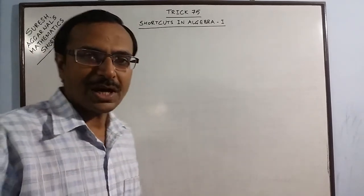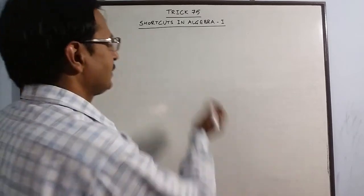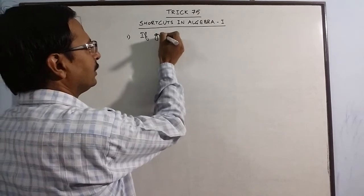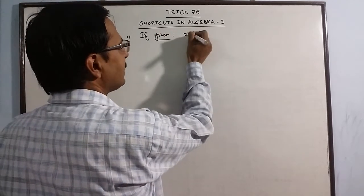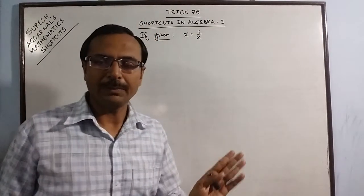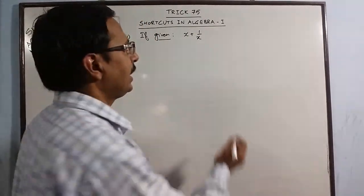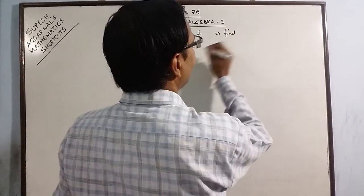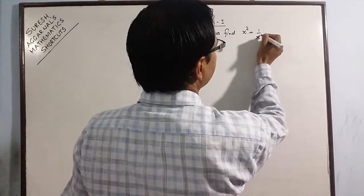The first shortcut which I am going to deal with is if you are given x plus 1 by x, say the value of x plus 1 by x is given to you and we have to find the value of x squared plus 1 over x squared.